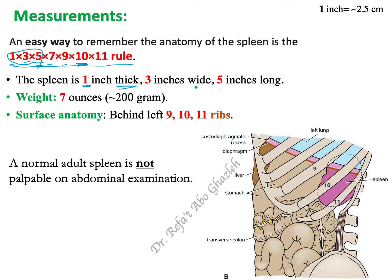The first three numbers — 1, 3, 5 — indicate: 1 is the thickness of the spleen, 3 is the width, and 5 is the length. These are in inches; each inch equals about 2.5 centimeters. So 1 inch is the thickness, 3 inches is the width, and 5 inches indicates the length.